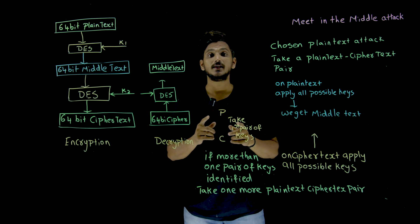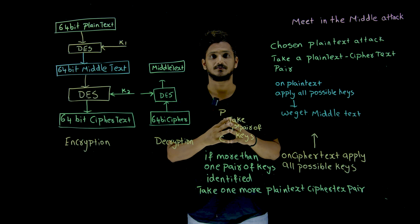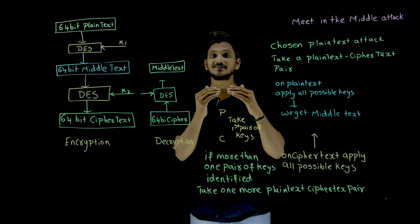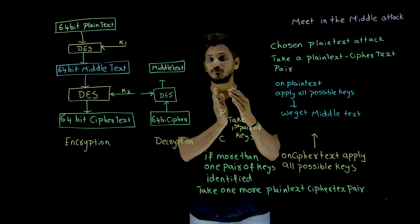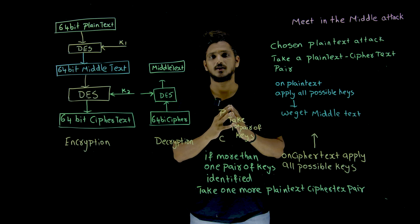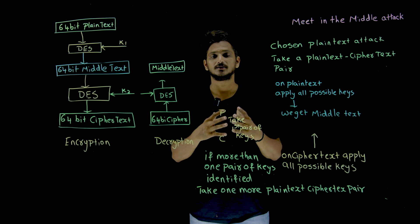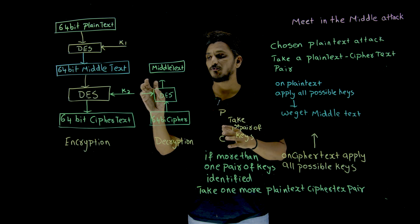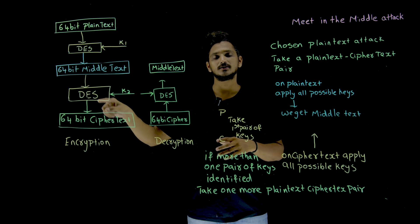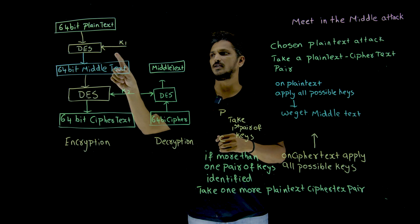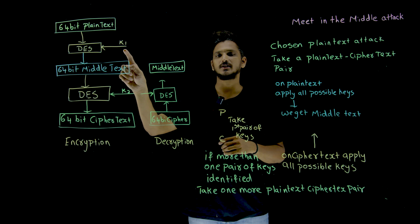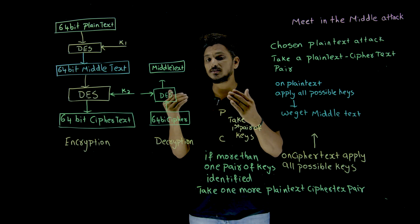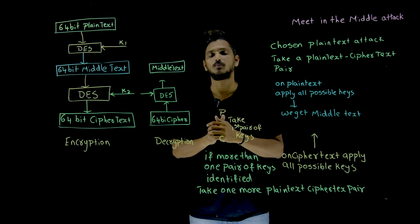In our last class we clearly discussed about 2DES. We discussed that we improved the size of the key from 2 power 56 to 2 power 112 possibilities. In 2DES, K1 and K2 each have a size of 56 bits, so total possibilities are 2 power 56 plus 56, which is 2 power 112 possibilities.